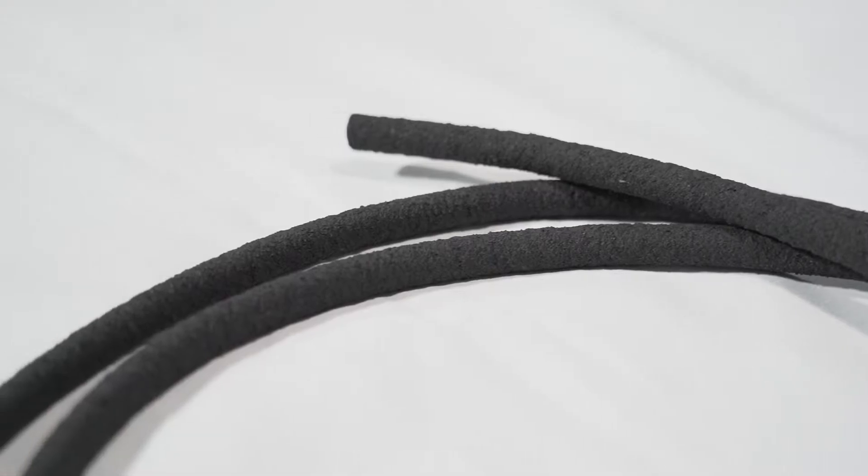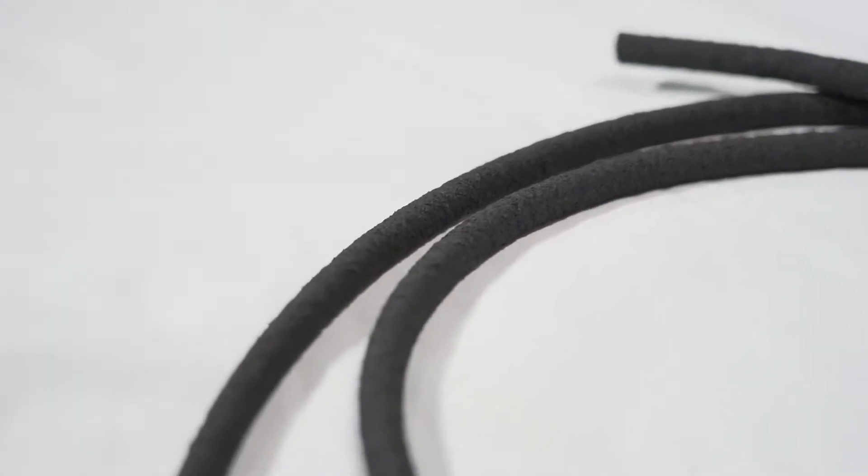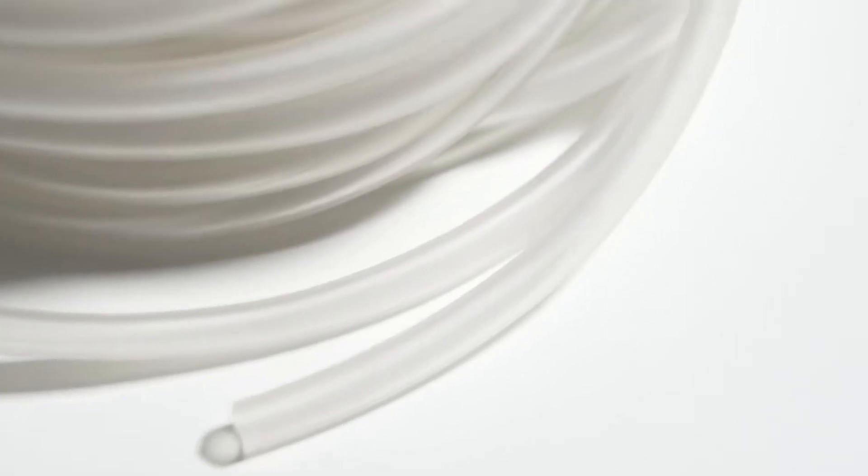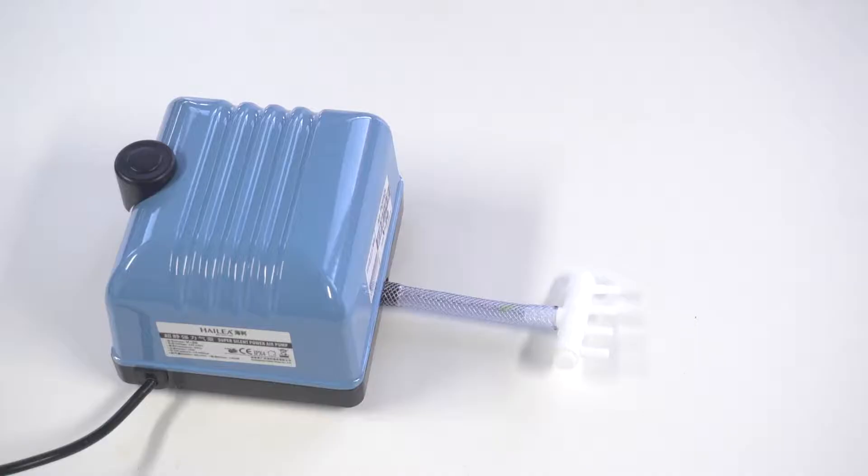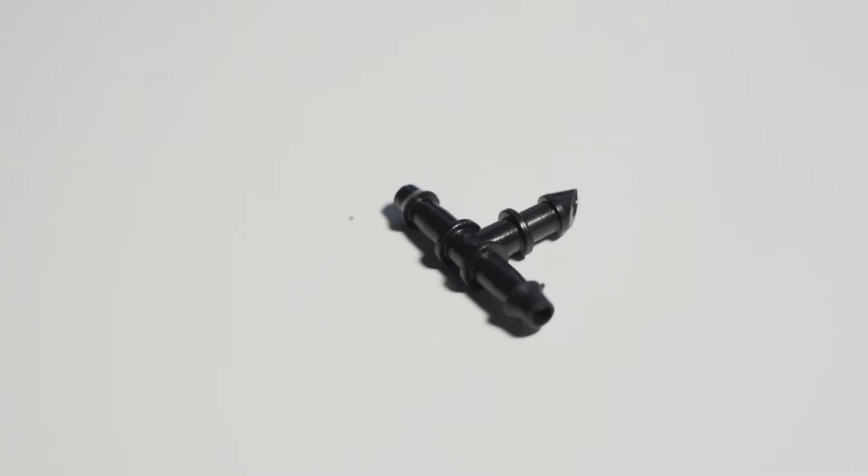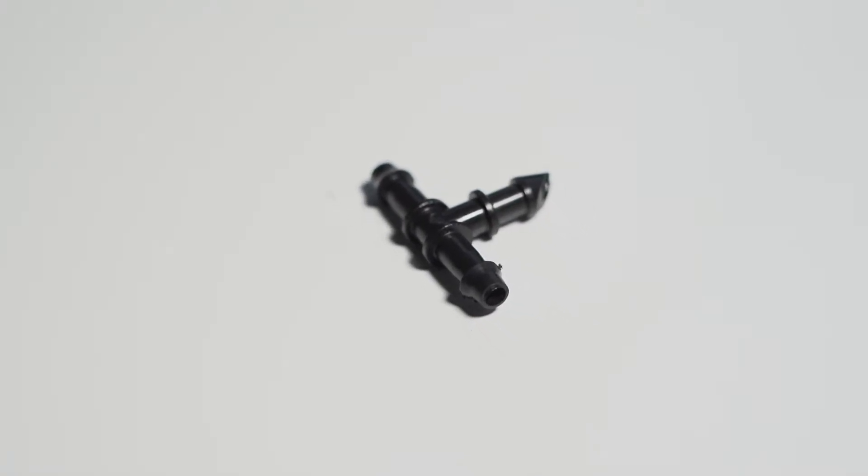Before we get started, ensure you have one porous pipe or air curtain per pot, enough air line to reach each pot and the correct air pump for your setup. If you are using porous pipe, you will also need the relevant T pieces to connect the pipe together.